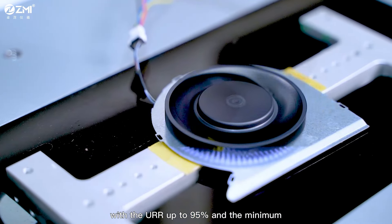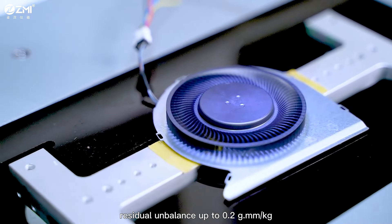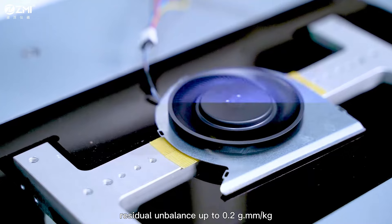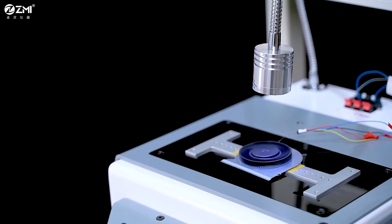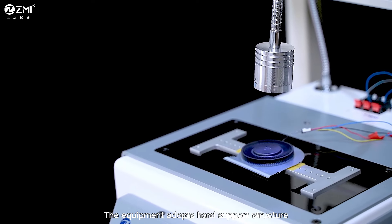The balance effect is remarkable, with the URR up to 95%, and the minimum residual unbalance up to 0.2 grams per mm per kg. The unbalance interference ratio is less than 2%.